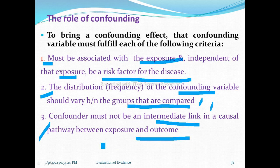For example, in a study on lung cancer and smoking, alcohol drinking may be a confounding variable, because smokers are often also drinkers. Alcohol drinking, independent of smoking, may cause lung or stomach problems — so it could be a confounding variable.